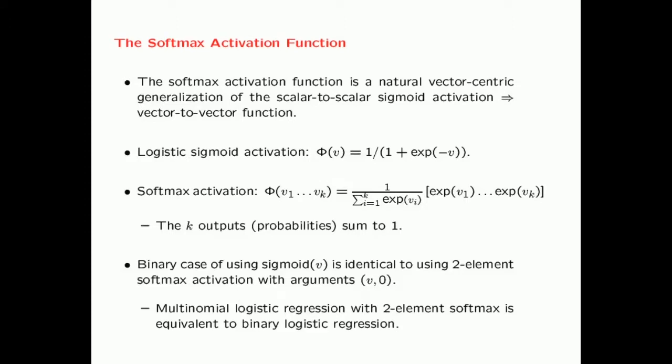Before we discuss multinomial logistic regression, we will introduce the softmax activation function. The softmax activation function is a natural vector-centric generalization of the scalar-to-scalar sigmoid activation — it is essentially a vector-to-vector function. Recall that the logistic sigmoid activation function was obtained by taking the value v, exponentiating its negative, and then computing 1 over 1 plus that exponentiation, which always gives a value between 0 and 1.